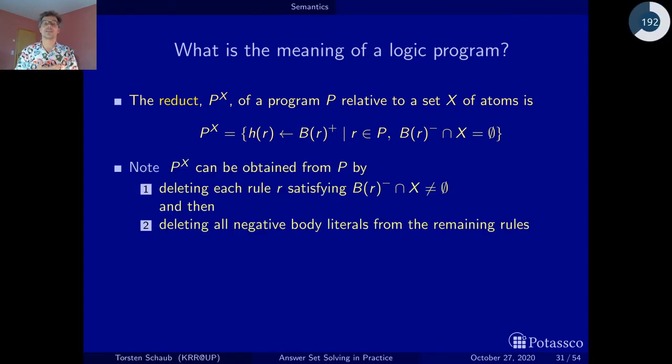This is the stable model semantics. But as you see before we do that, just another view on the reduct. One way to obtain this reduct is to adapt what we've done before. You can obtain the reduct by deleting all rules that have atoms in the negative body that belong to X, and then we delete all the remaining negative body literals from the rules that remain. And this way we obtain the reduct.